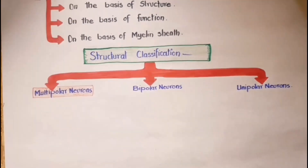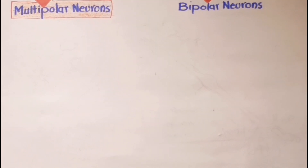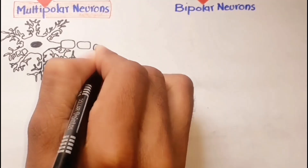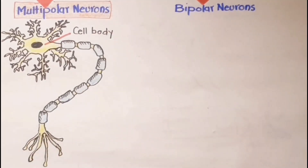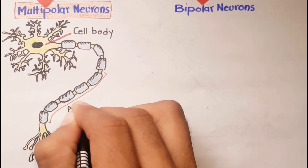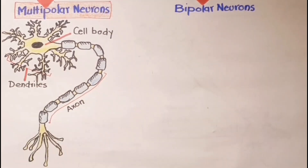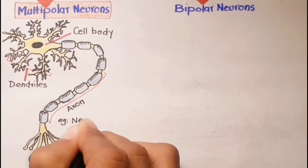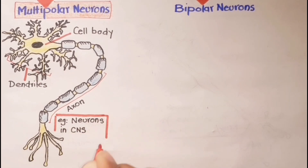Let's discuss multipolar neurons first. Multipolar neurons have many processes arising from their cell bodies; only one process of each neuron is an axon, and the rest are dendrites. Most neurons whose cell bodies lie within the brain or spinal cord are multipolar.